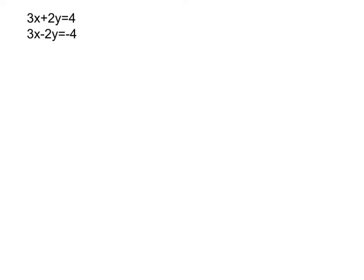Here's an example of a system of equations we can use elimination to solve: 3x plus 2y equals 4, and 3x minus 2y equals negative 4. This is one of those examples where step one can actually be skipped because our like terms already have convenient coefficients. 3x and 3x have the same coefficient, and 2y and negative 2y have opposite coefficients. When both line up like this, you get to choose whether to add or subtract depending on which variable you want to eliminate. Since it's always easier to add than subtract, let's do that.